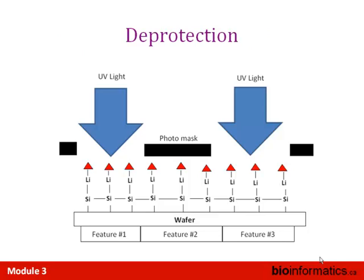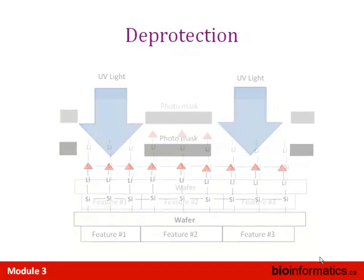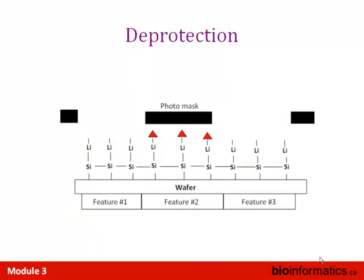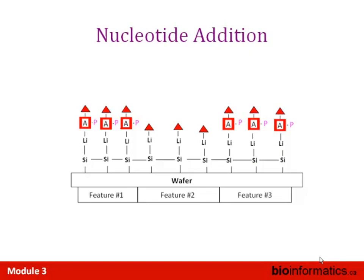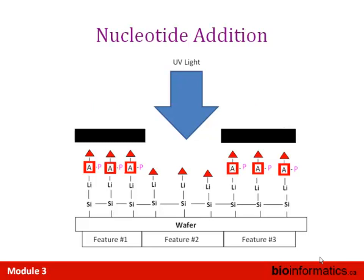With the wafer silenated and linker molecules attached, UV light shines through the mask. The UV light stimulates the linker in such a way that it can be easily removed — deprotection. Then phosphorylated nucleotides are passed over; they contain a linker molecule on one end and a reactive end on the other that can attach directly to the linker, building up an A on features one and three. Everything is washed off and the process is repeated with a different mask.